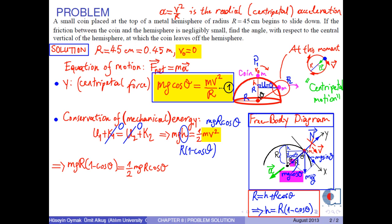The terms M times G times R at both sides are cancelled. So, we are remained with 2 minus 2 cosine theta equals cosine theta. Therefore, cosine theta equals 2 thirds. From this, theta is obtained as arccos 2 thirds, which is calculated to be 48.2 degrees.